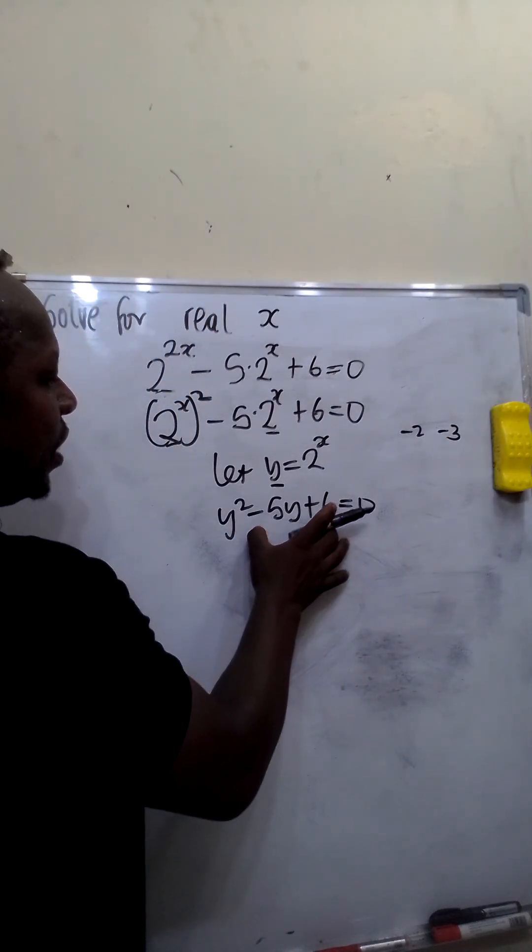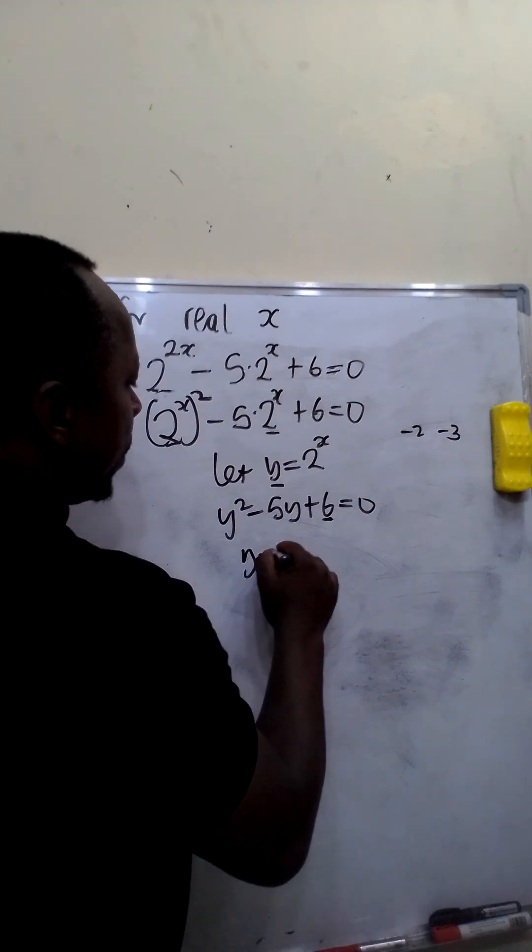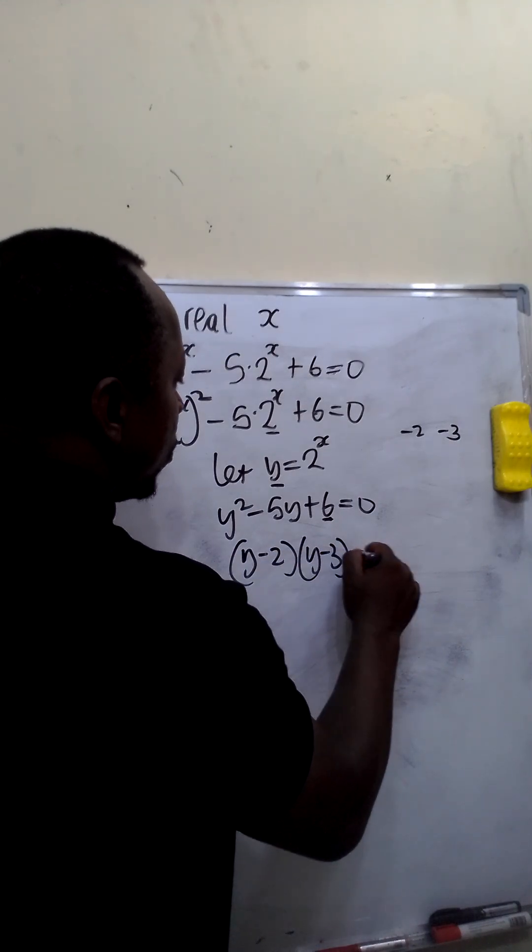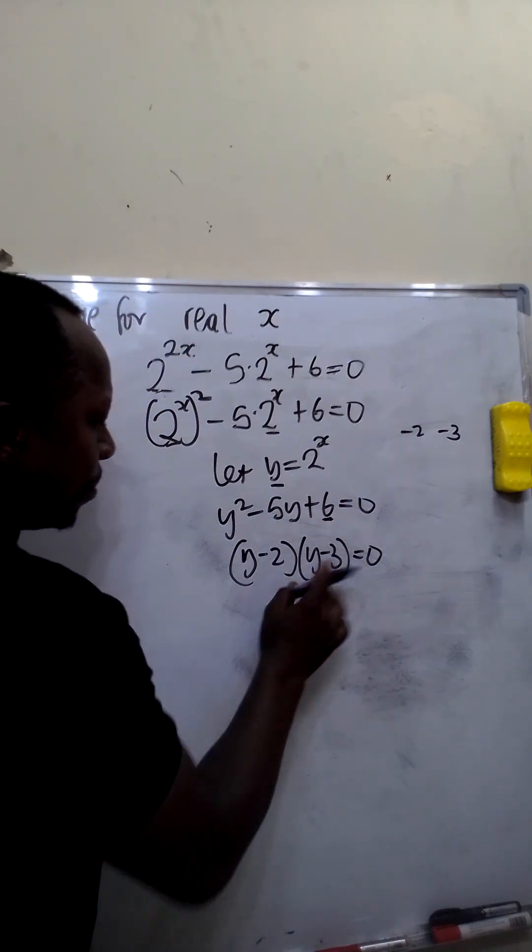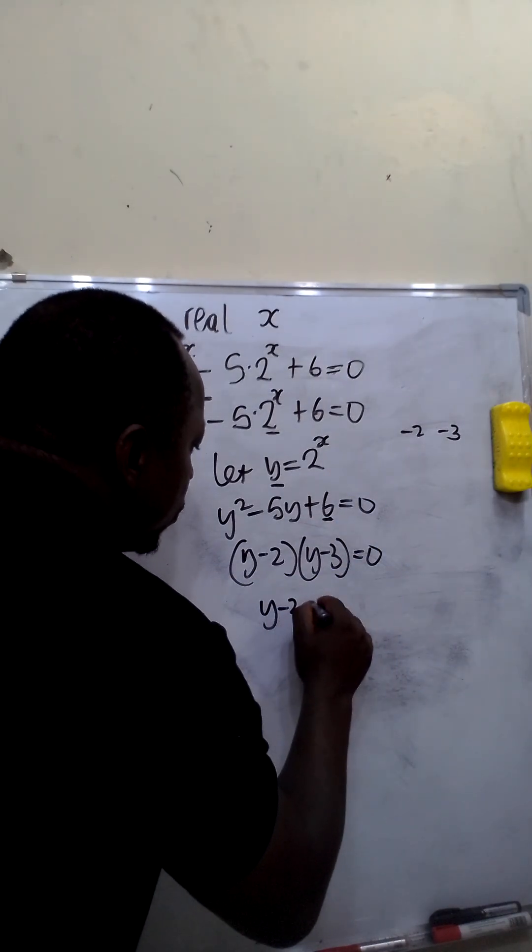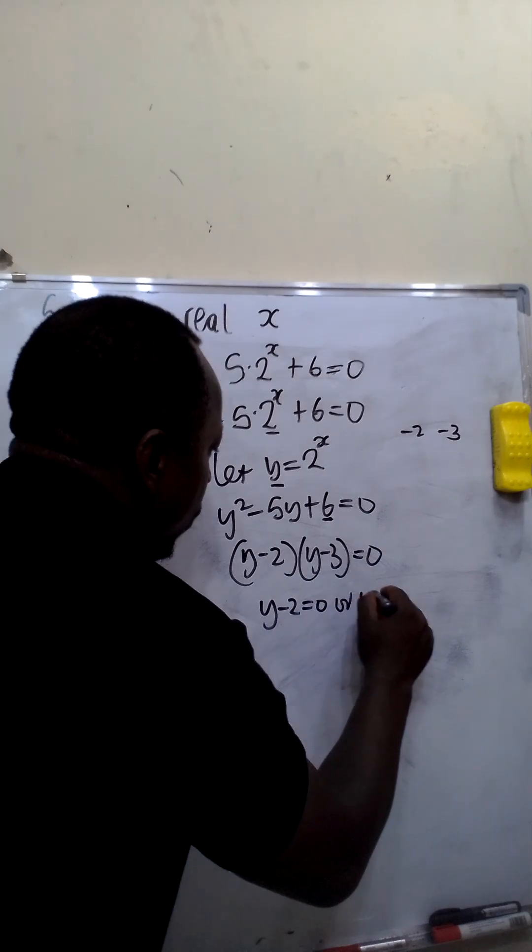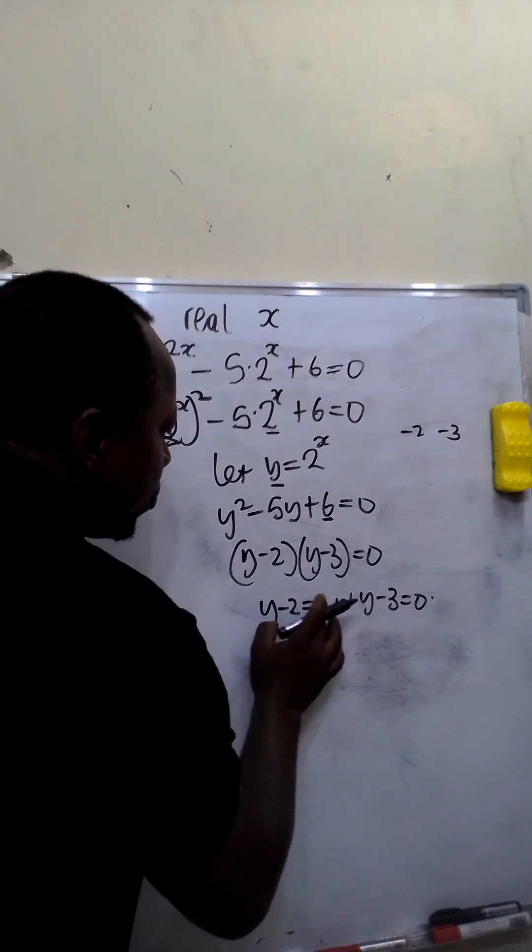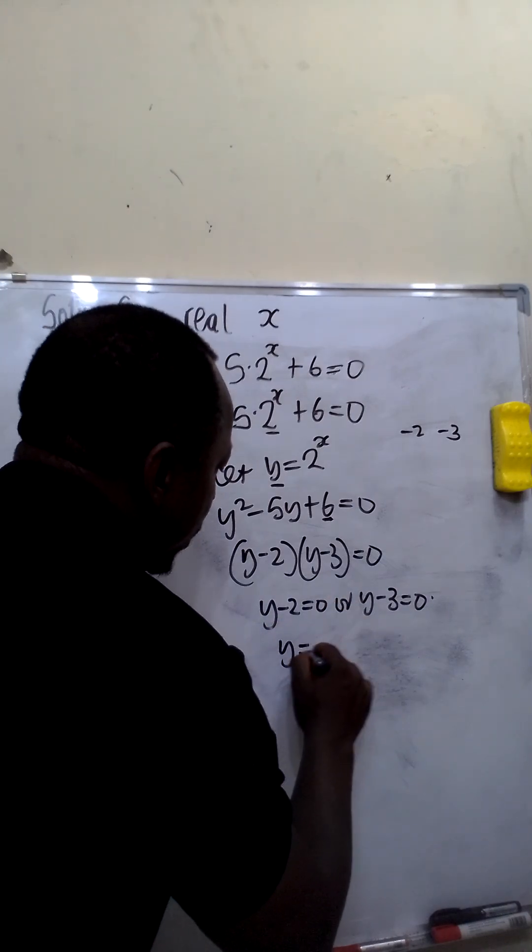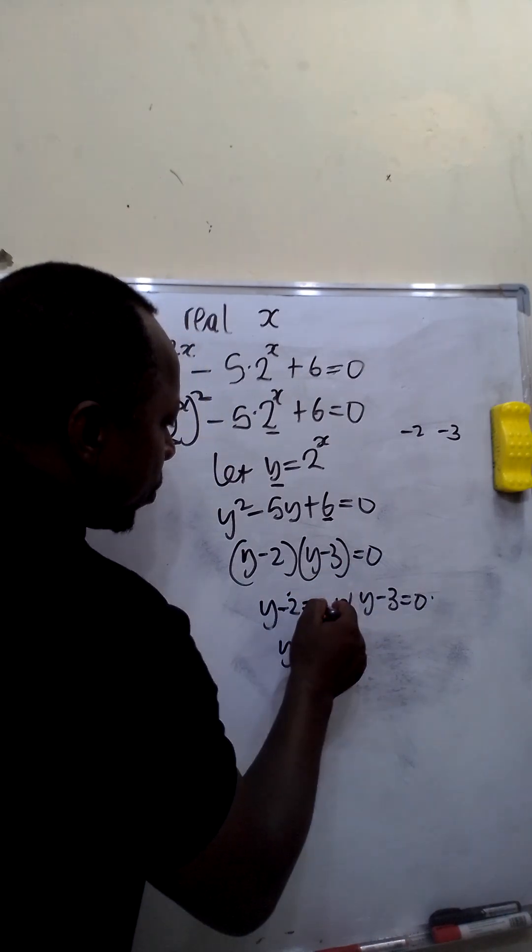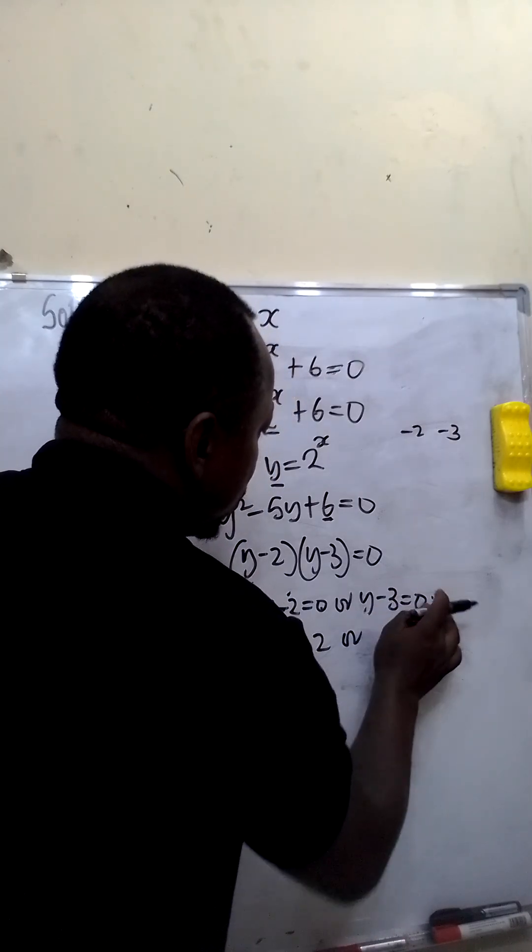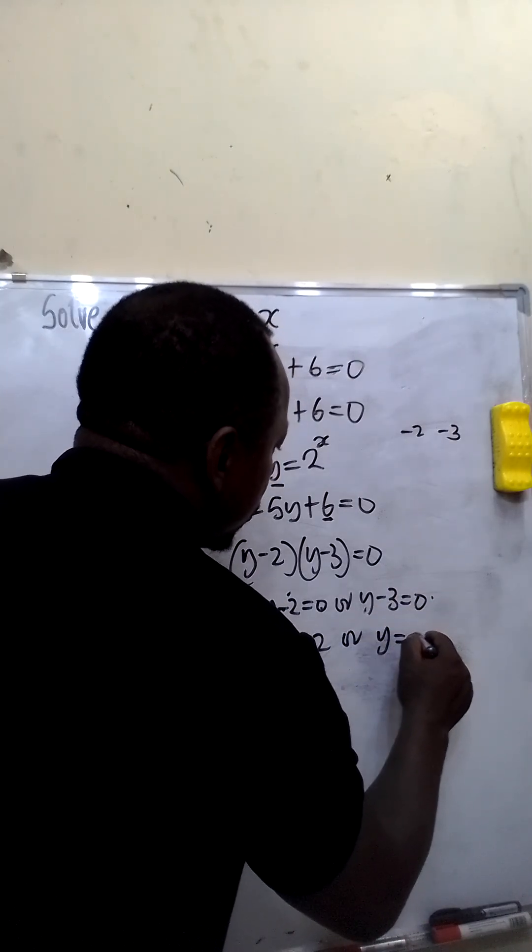So this equation will become y minus 2 bracket y minus 3 equal to 0. This implies y minus 2 is equal to 0 or y minus 3 is equal to 0. When y minus 2 is equal to 0, our y will be equal to 2. That is minus 2 we cross to become plus 2. Or when y minus 3 is equal to 0, our y will be equal to 3.